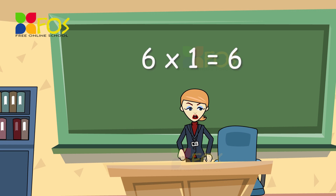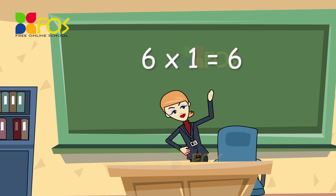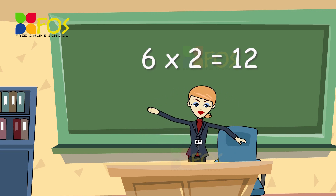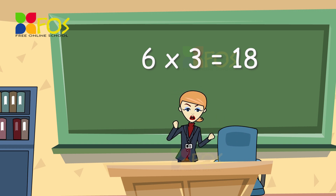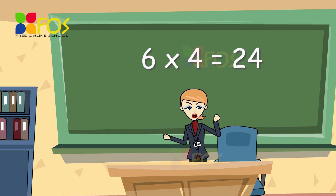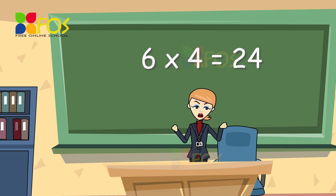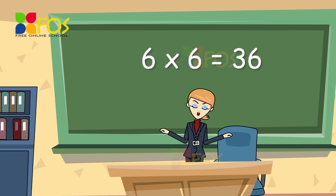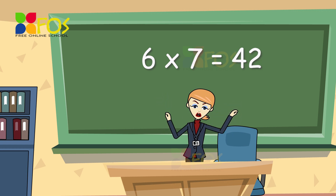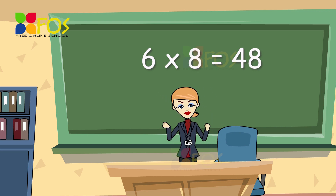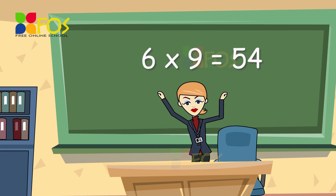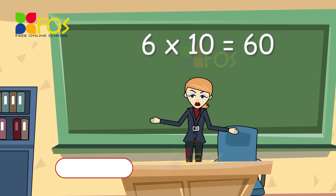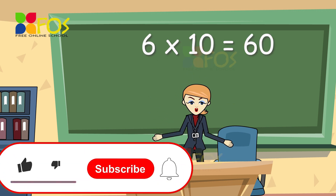Six ones are six. Six twos are twelve. Six threes are eighteen. Six fours are twenty-four. Six fives are thirty. Six sixes are thirty-six. Six sevens are forty-two. Six eights are forty-eight. Six nines are fifty-four. Six tens are sixty.